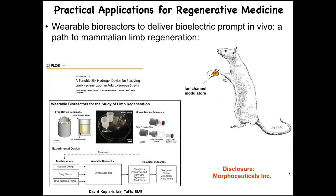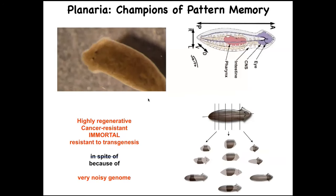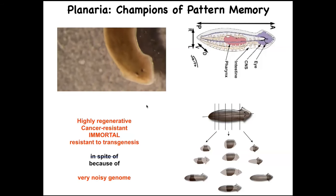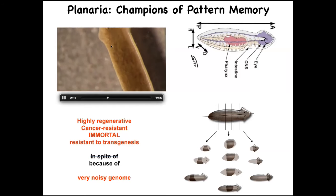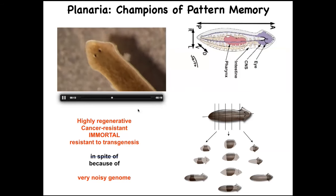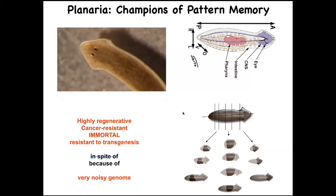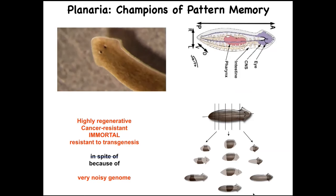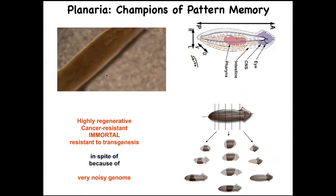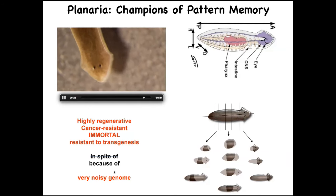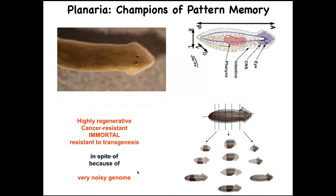I should disclose that Morphoceuticals is a company that Dave Kaplan and I founded to do this in mammals and eventually human patients. Another example that lets us see how much we can import from neuroscience: planarians — flatworms that regenerate, are cancer-resistant, immortal with no aging, and extremely resistant to transgenesis. When you cut them into pieces — the record is 276 pieces — each piece gives rise to a perfectly normal worm.